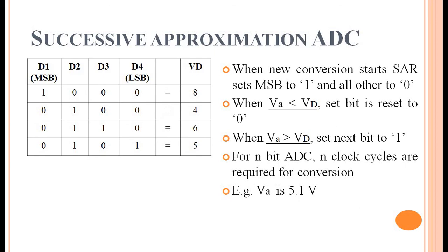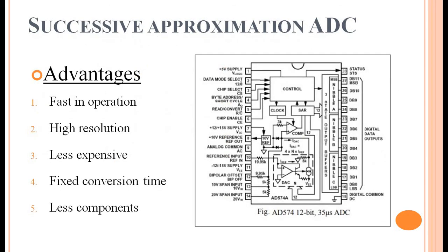The advantages of successive approximation ADC include: it is fast in operation; it provides high resolution if more bits are used; it is less expensive due to fewer components — only one comparator, one resistor, a control gate, and a DAC are required; and it has a fixed conversion time, where the conversion rate is determined by the clock pulse and the number of bits.